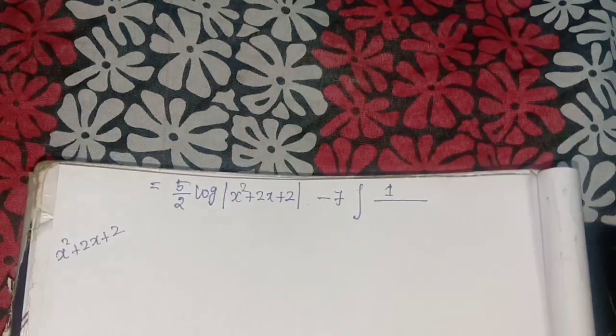So we have: (5/2) times log modulus (x squared plus 2x plus 2) minus 7 times the integral of 1 divided by ((x plus 1) squared plus 1 squared) dx. Using the standard formula: integral of 1/(x squared plus a squared) dx equals (1/a) times tan inverse of (x/a) plus C.